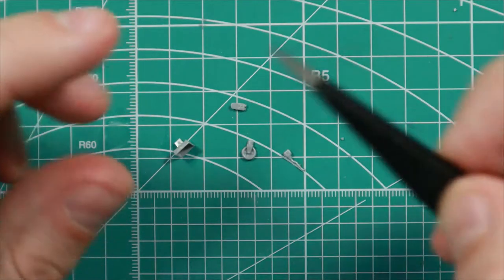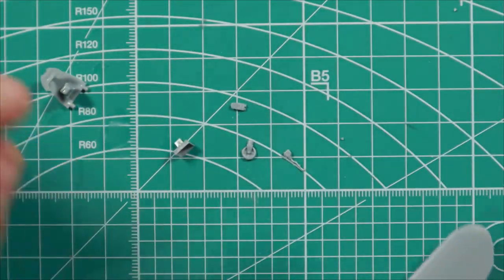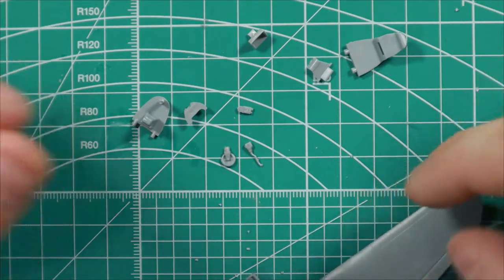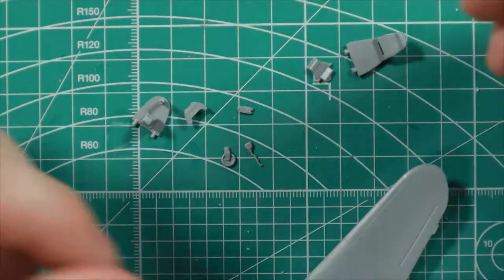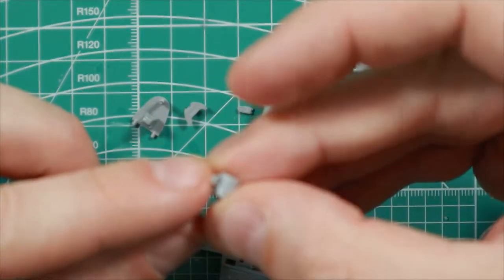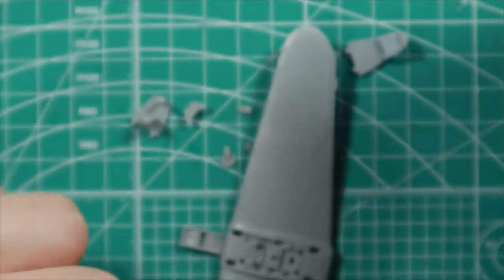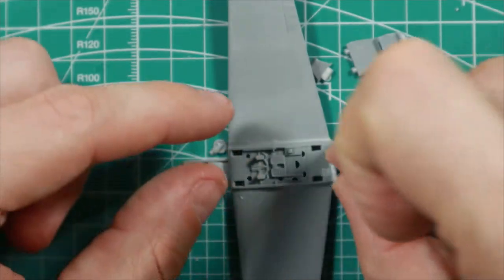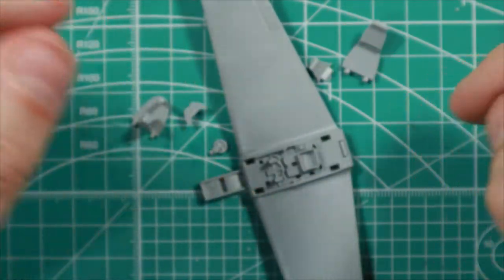Here is where tweezers might come in handy because the parts are really small. Just like before, test fitting before actually gluing them in place is very much recommended. We'll take the seat, see the seat has a semicircle here and we have a semicircle inside here, so we'll just basically put one in the other like so.